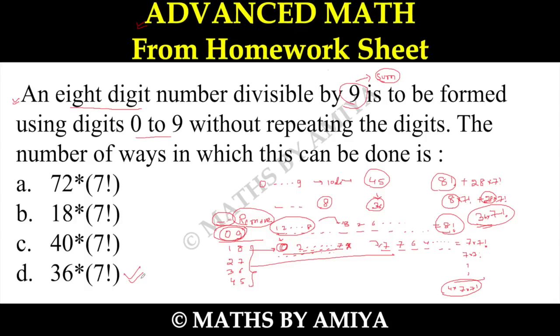This one is nothing but option number D. So whenever you have P and C with divisibility, I would say make cases. If you don't have shortcuts, then making cases is always best. However many cases there are, prepare formations for them, add them all, and get the answer. The answer to this particular question is option number D: 36 times 7 factorial.